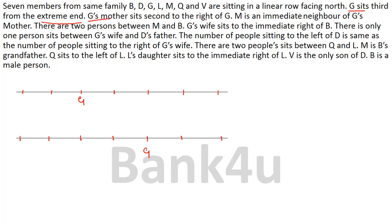The next clue: G's mother sits second to the right of G. All people are facing north, so G's right is clear. Second to the right of G is G's mother. In the first possibility, G is here and the person two seats to the right is G's mother. In the second possibility, G is here and the person two seats to the right is also G's mother.